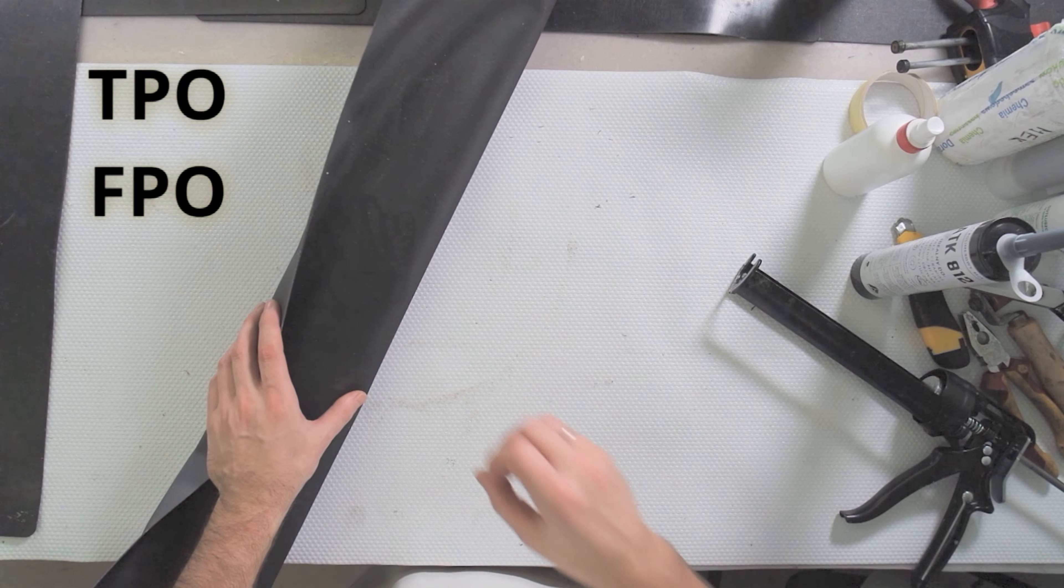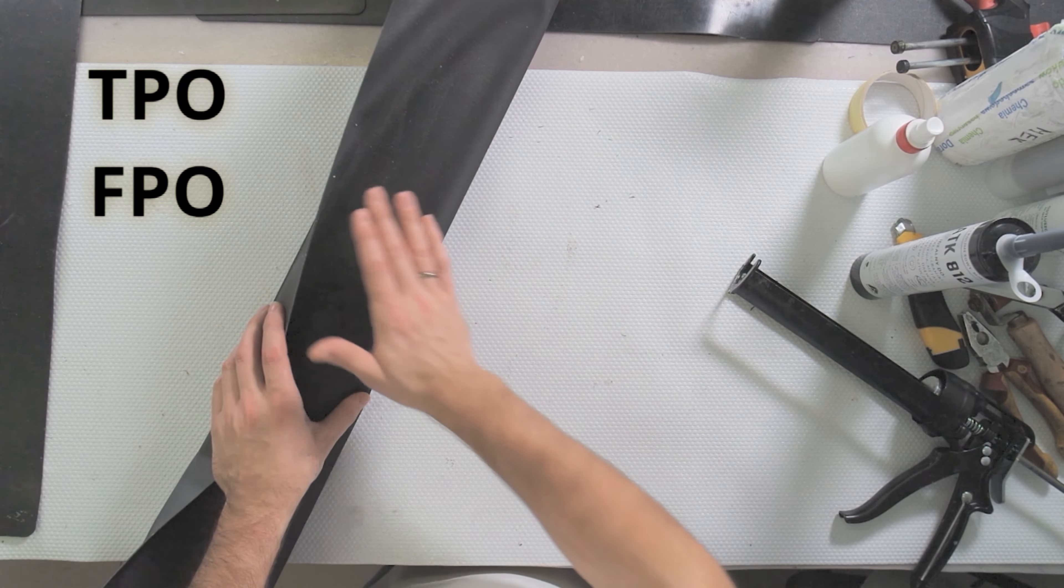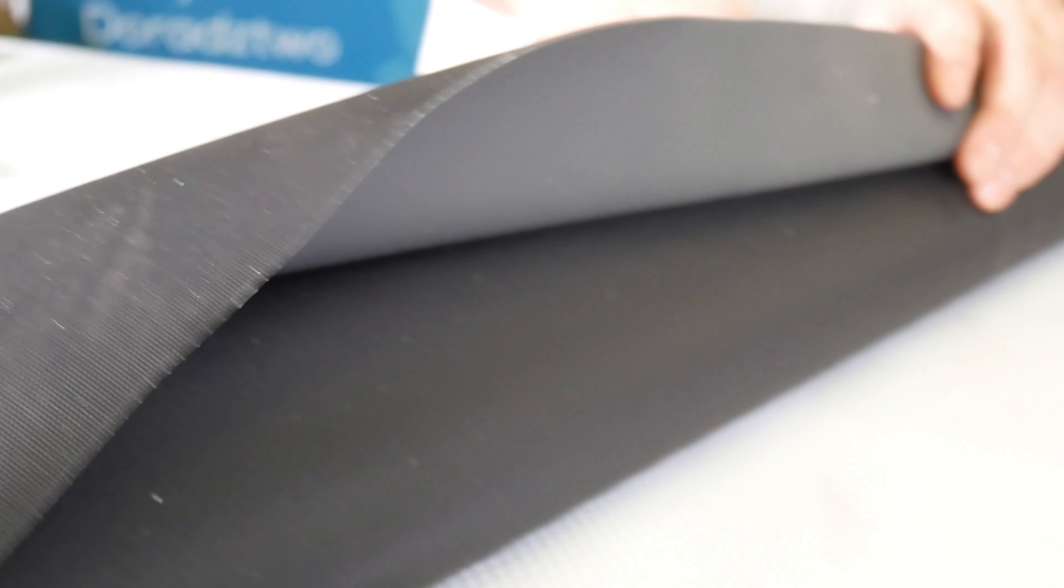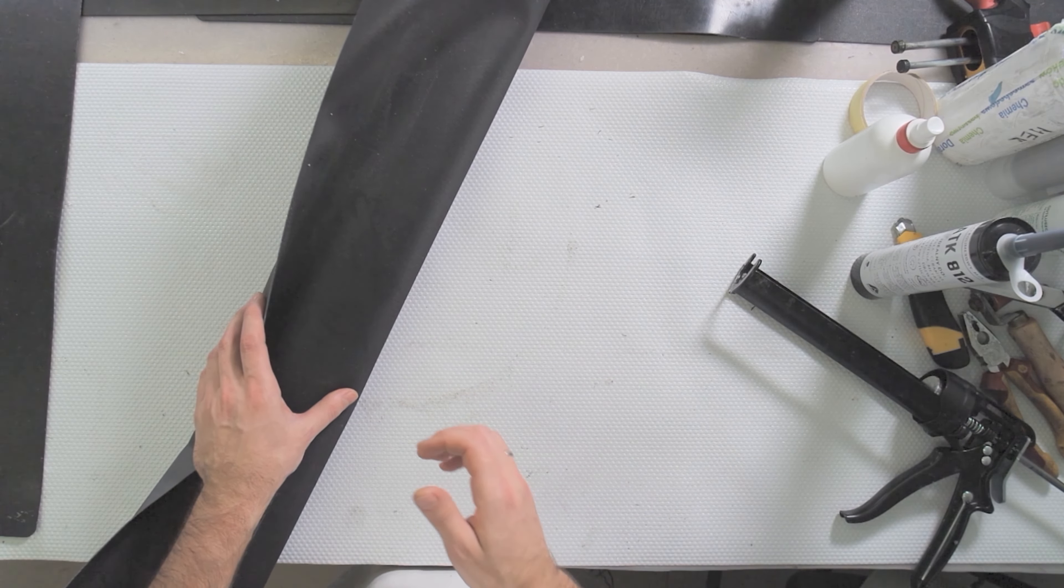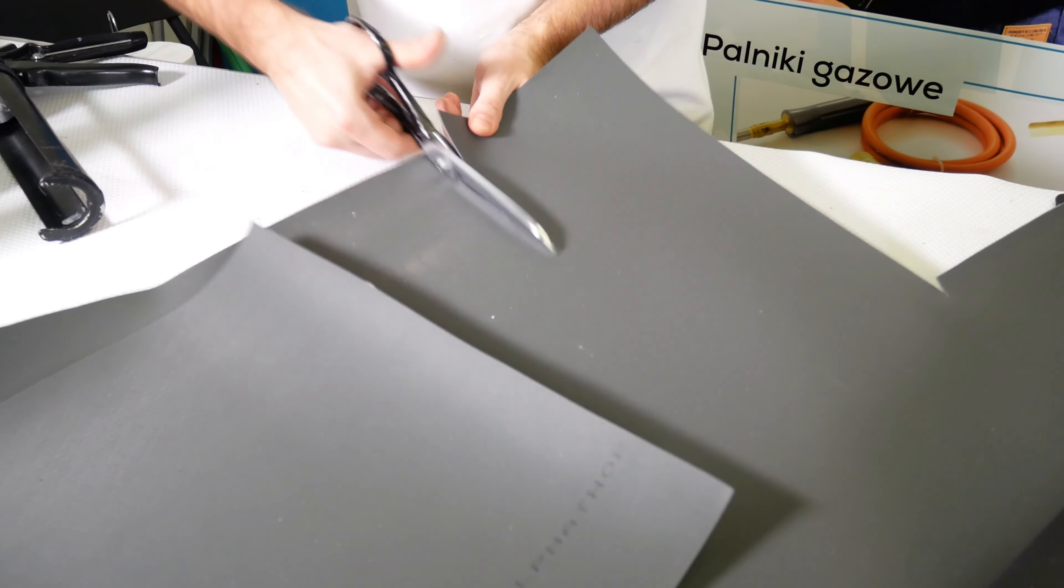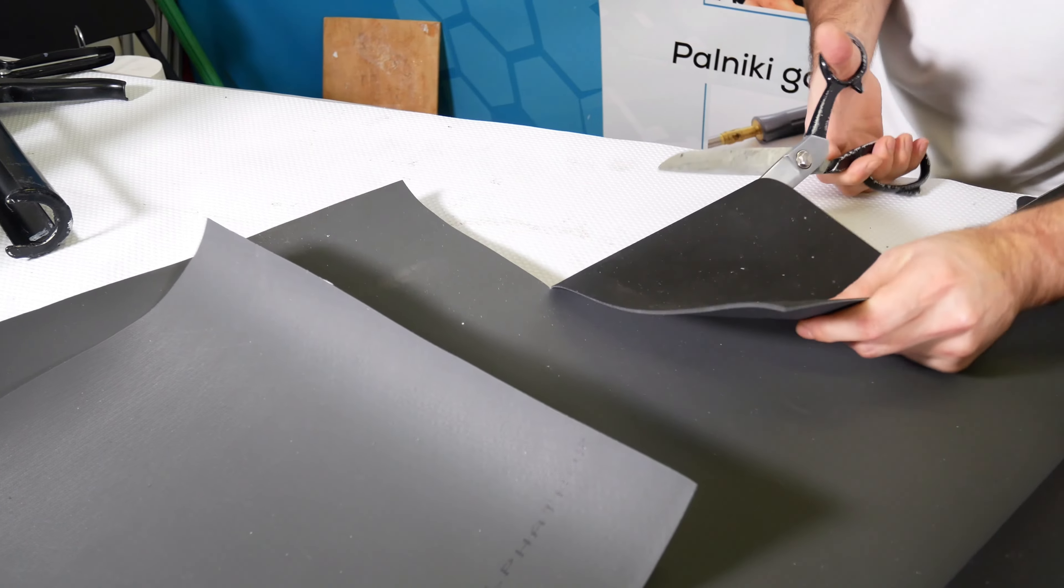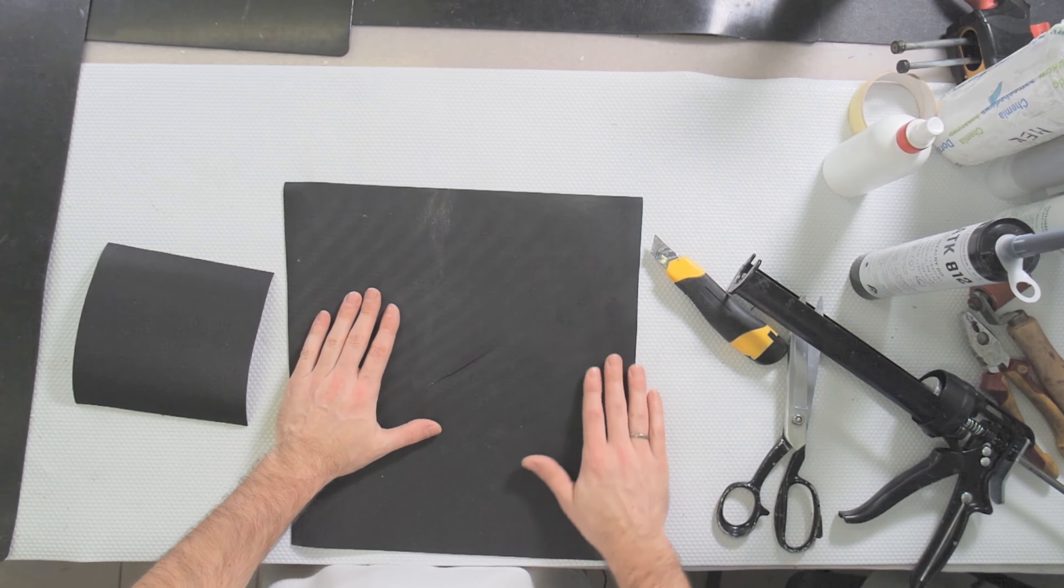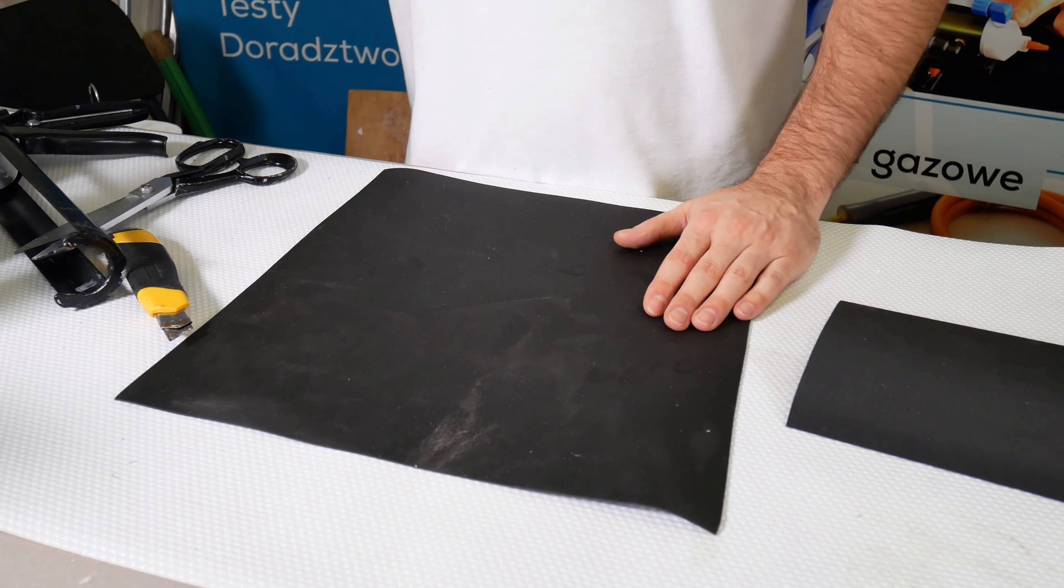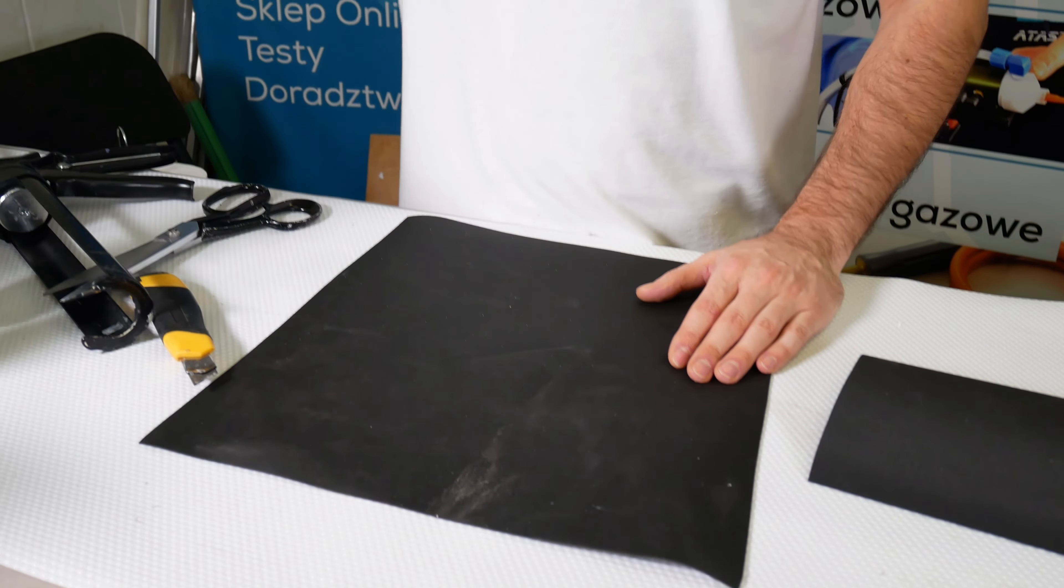Also under the name FPO, repairs of this type so far looked like we had to have a welding machine because the adhesive alone without a proper primer held very poorly. You will see the different stages of the repairs. We have a hole. The repair will be done with ATK 812 adhesive.